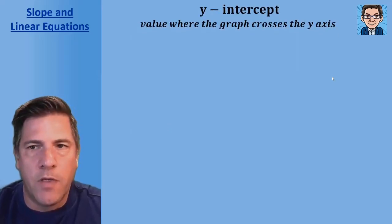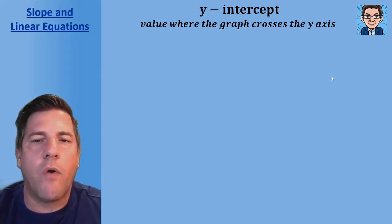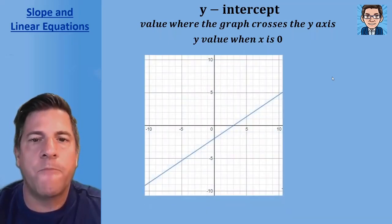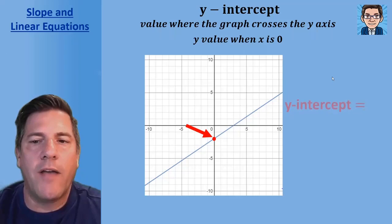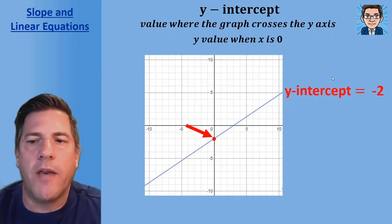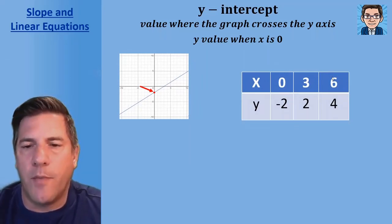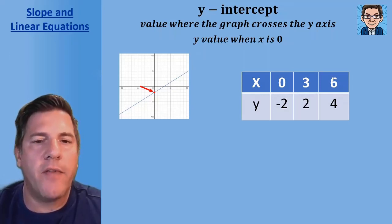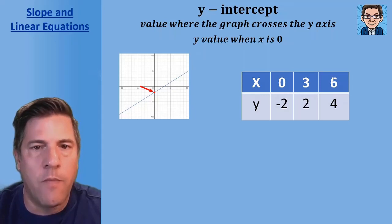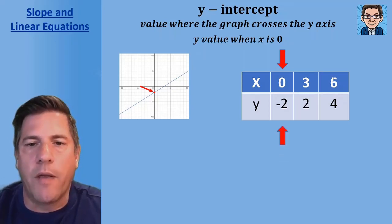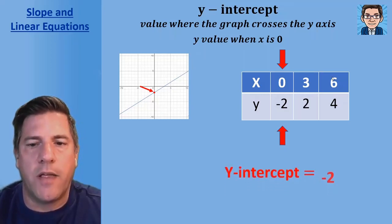Now let's look at the y-intercept. The y-intercept is where the graph crosses the y-axis — it's also the y-value when x equals zero. Back to our same graph, the point where it crosses the y-axis is right there. In a table of values, we find the y-value when x equals zero. If we look at the table and find where x is zero, that y-value is our y-intercept, which here is y equals negative two.